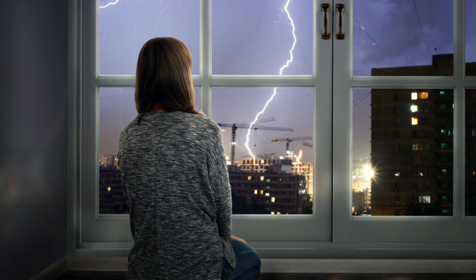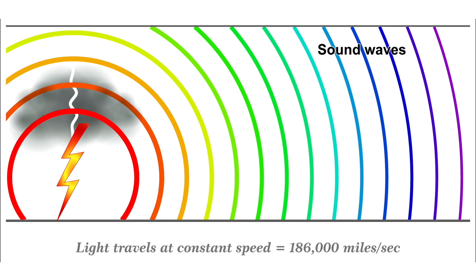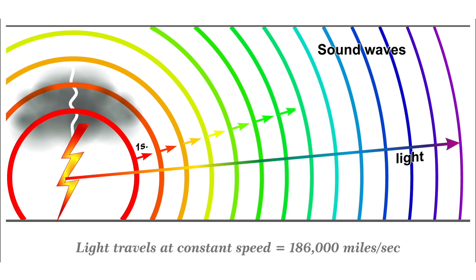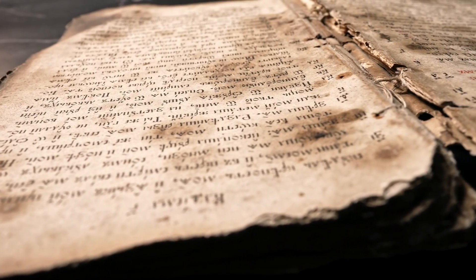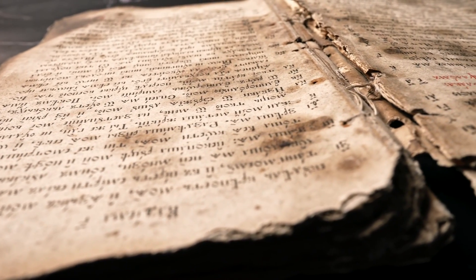But how much faster? The short answer is pretty doggone fast. The long and scientifically accurate answer is that light moves at 300,000 kilometers per second, or 186,000 miles per second, which is roughly one million times faster than the speed of sound in air. In ancient times, people tried to measure the speed of light, but no instrument was accurate enough. Light moves so fast that at one point, people thought its speed was infinite. Several experiments in the 1800s proved that wasn't the case.